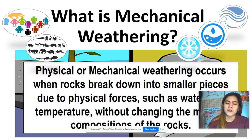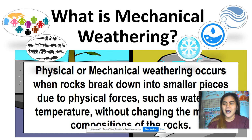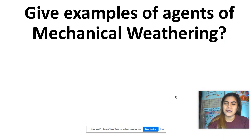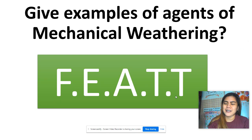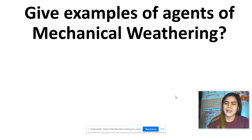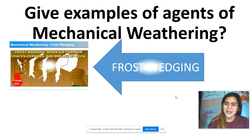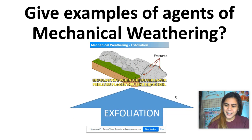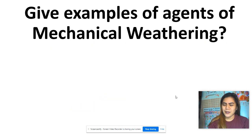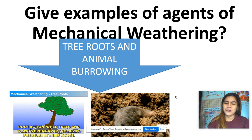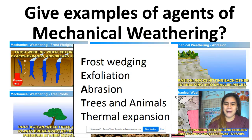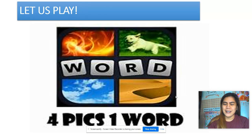Physical weathering has something to do with the breaking down of rocks into smaller pieces due to physical forces such as water and temperature, without changing its composition. The five agents of mechanical weathering are: frost wedging, exfoliation, abrasion, roots and animal burrowing, and thermal expansion.